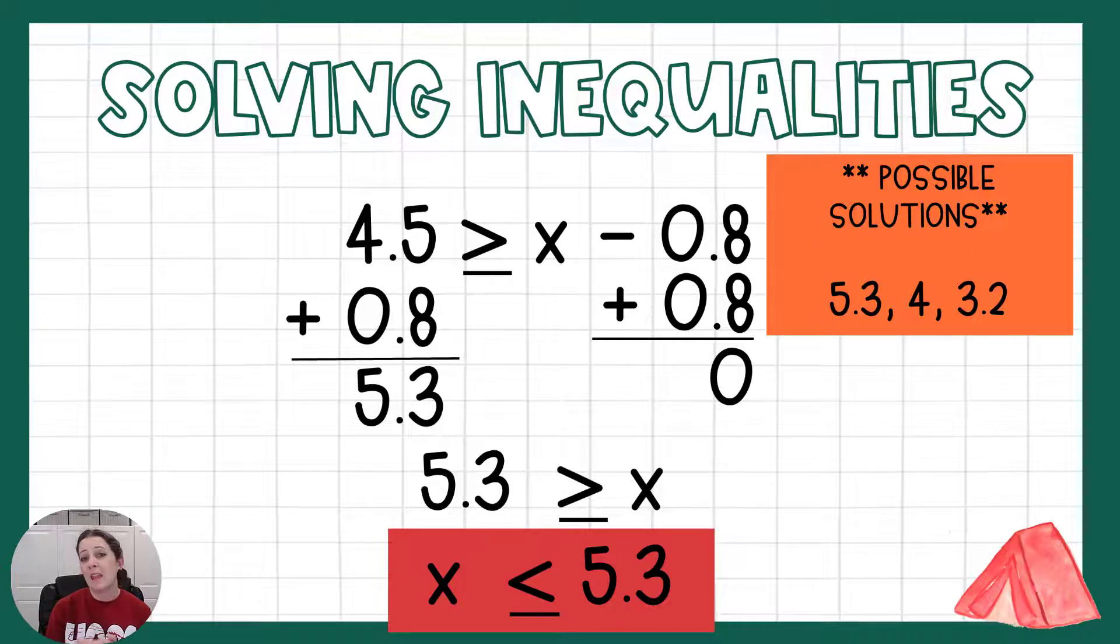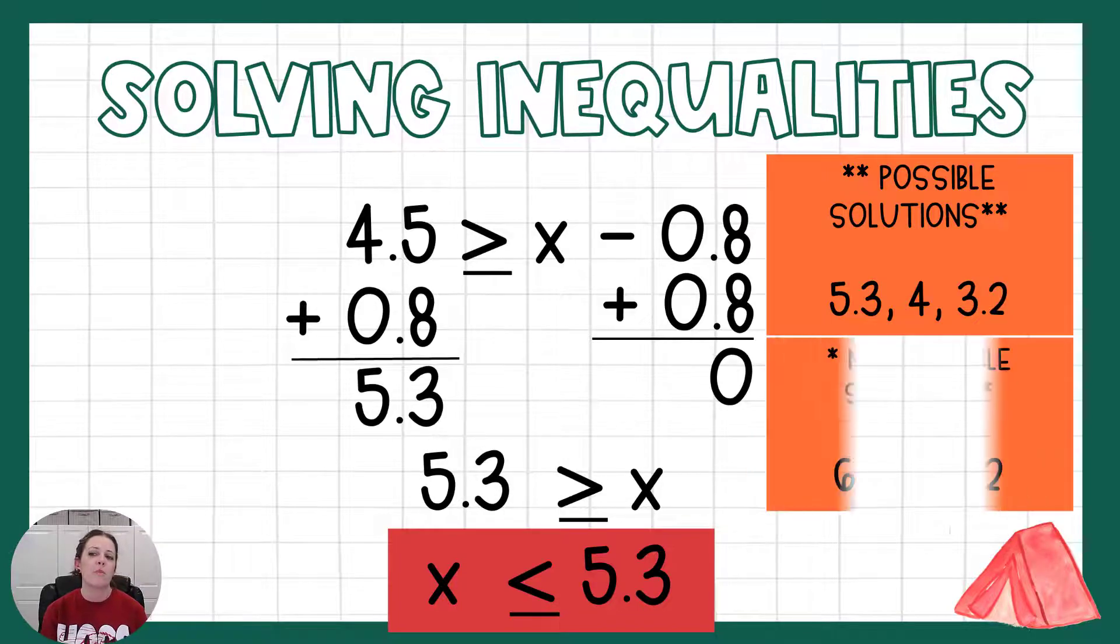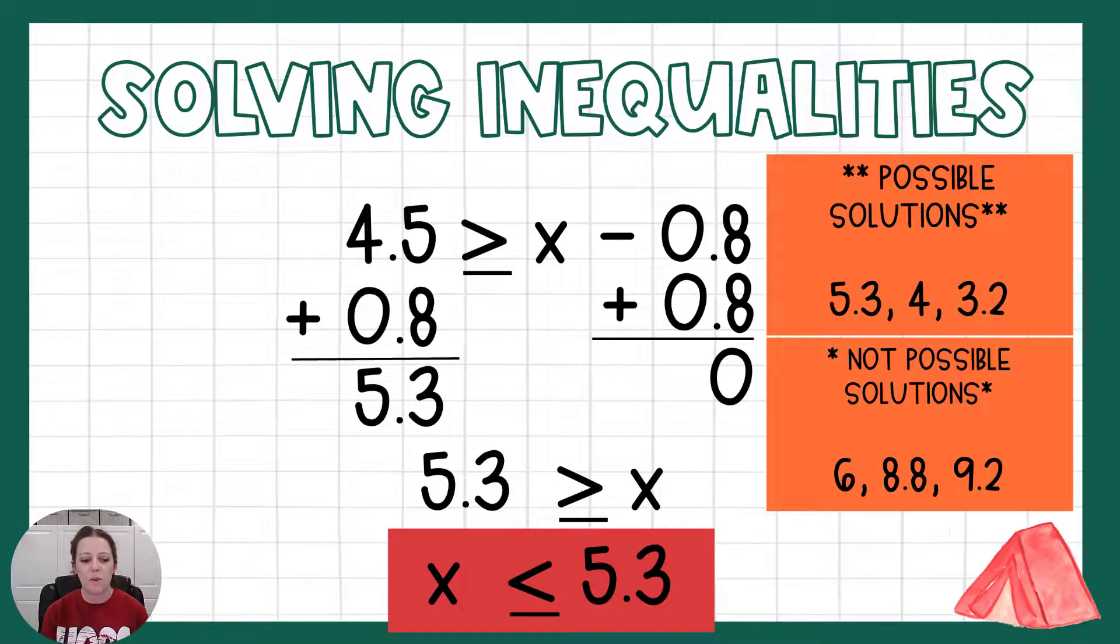Possible solutions: this one can be 5.3 because that less than sign is underlined, so it means it can be that, or it could be 4 or 3.2. Things it cannot be: anything bigger than 5.3, so 6 or 8.8 or 9.2.